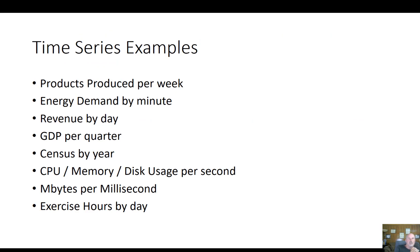Here are some examples of time series: products produced per week, energy demand by minute, revenue by day, GDP per quarter, census per year, CPU cycles or memory usage per second, Wi-Fi megabit rate per millisecond, or even exercise hours per day. Every one of these examples is measured per time unit — it's really a rate. You're talking nanoseconds, milliseconds, seconds, minutes, hours, days, weeks, months, years.